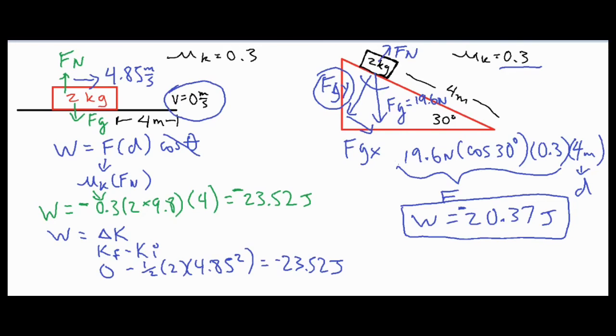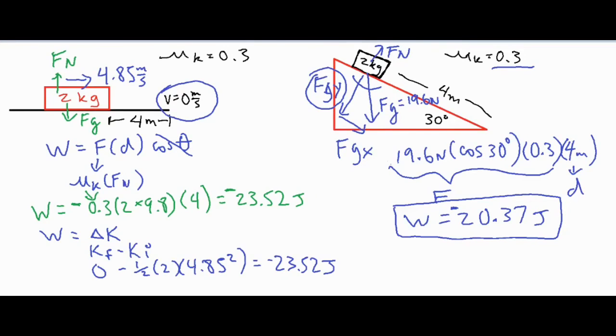Again, because that force is acting opposite of the direction it's moving, I typically put a negative in front of it to show that the 20.37 joules of energy are being removed from the block and the system. In addition to that, I'm going to add an extra component to this question. Say, for example, it slides along a flat surface and then eventually comes to rest.